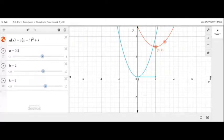Overall, the function translated 2 units to the right and 3 units upwards. And this is how we transform or graph a transformed quadratic function. Hope it helped and thanks for watching.